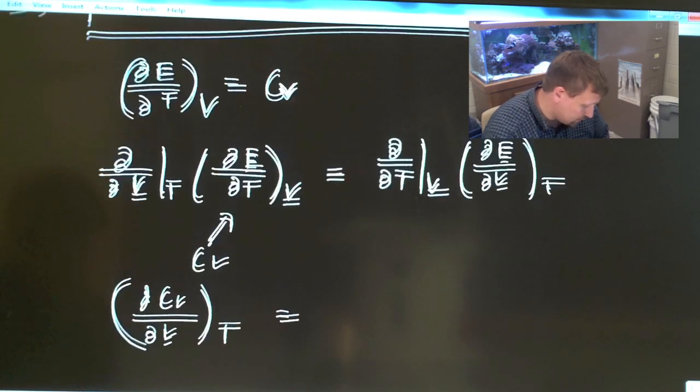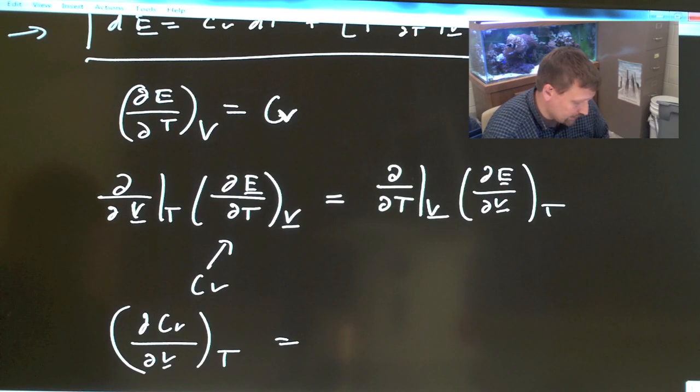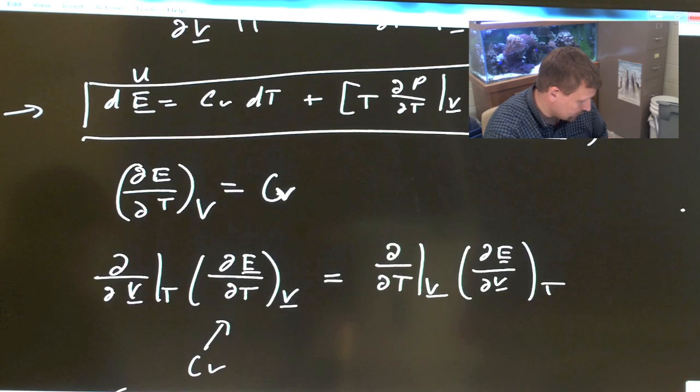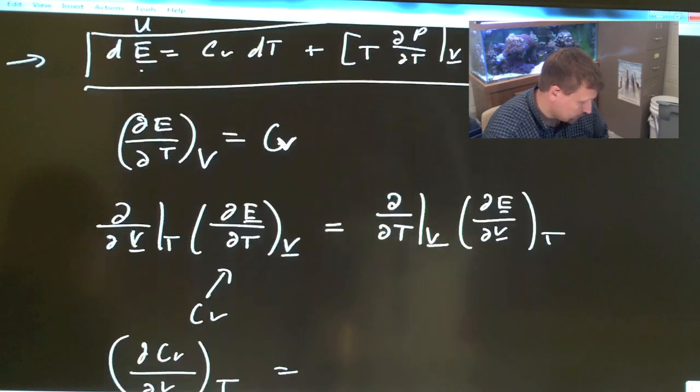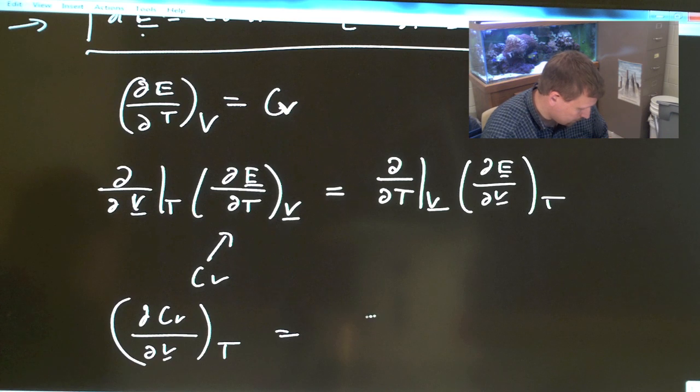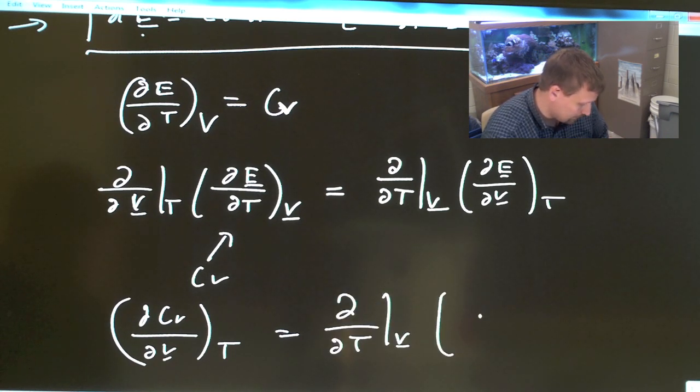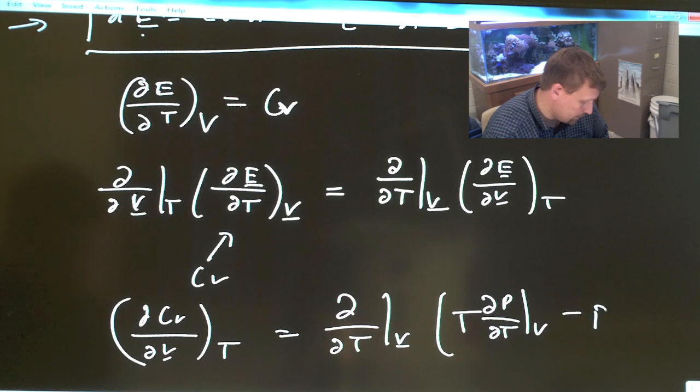Well, if we go back up to this equation, what is del E del V at constant T? Del E del V at constant T, this goes away, is equal to this whole term here in the brackets. So this is going to be equal to partial by partial T constant V of the whole term in the brackets, which is T del P del T constant V minus P.